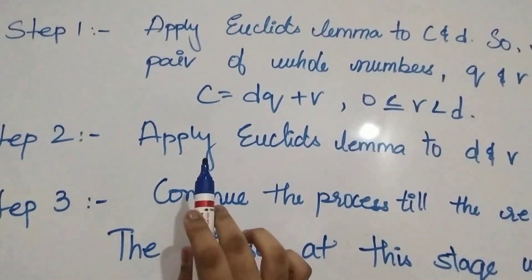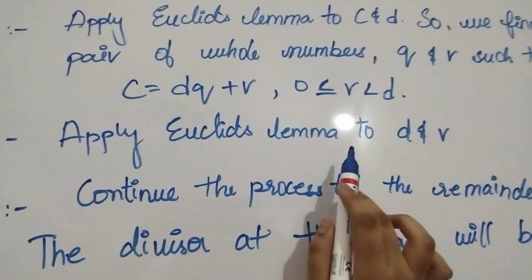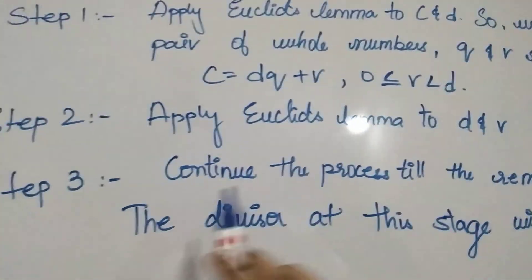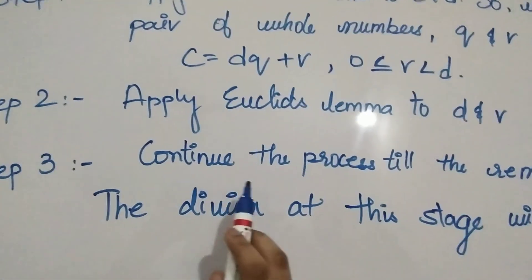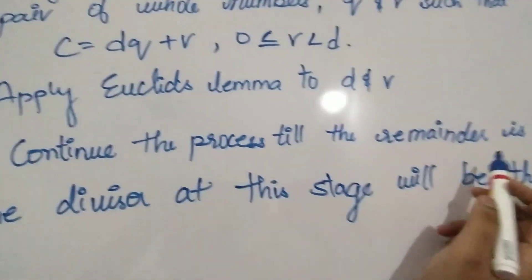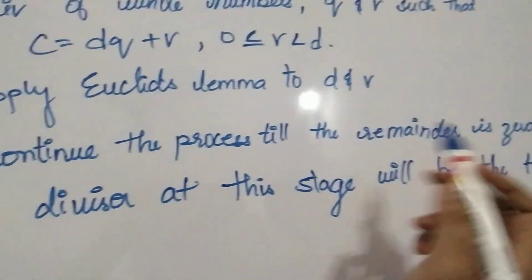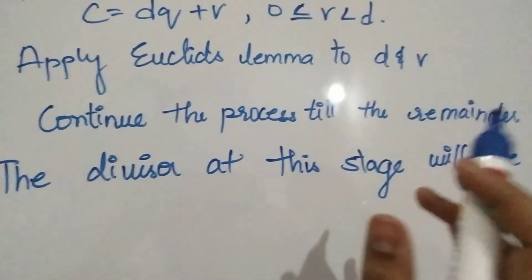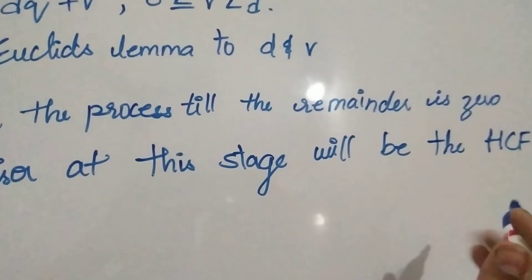Step 2, apply Euclid's lemma to D and R. Step 3, we need to continue the process until the remainder is zero. The divisor at this stage will be the HCF.